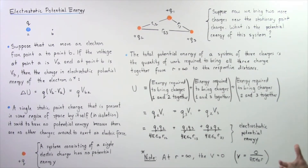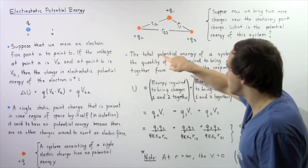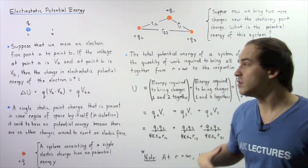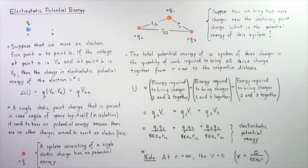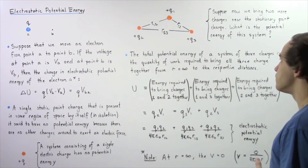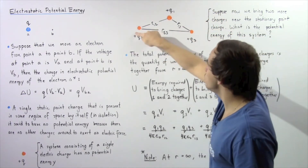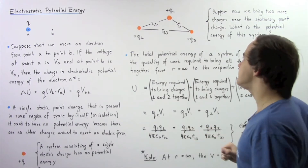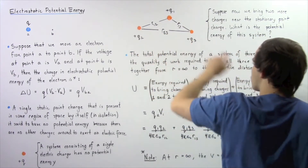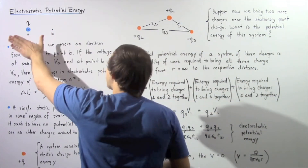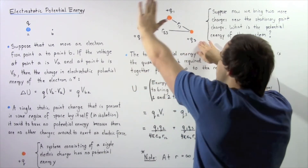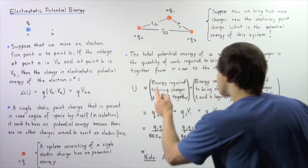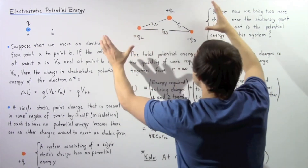What is the potential energy of this system? The total potential energy of a system of three electric charges is equal to the quantity of work required to bring all those charges together from an infinite distance away. Let's suppose the distance between charges 1 and 2 is given by R12, the distance between charges 1 and 3 is given by R13, and the distance between charges 2 and 3 is given by R23. The electrostatic potential energy equals the energy required to bring charges 1 and 2 a distance R12 apart.